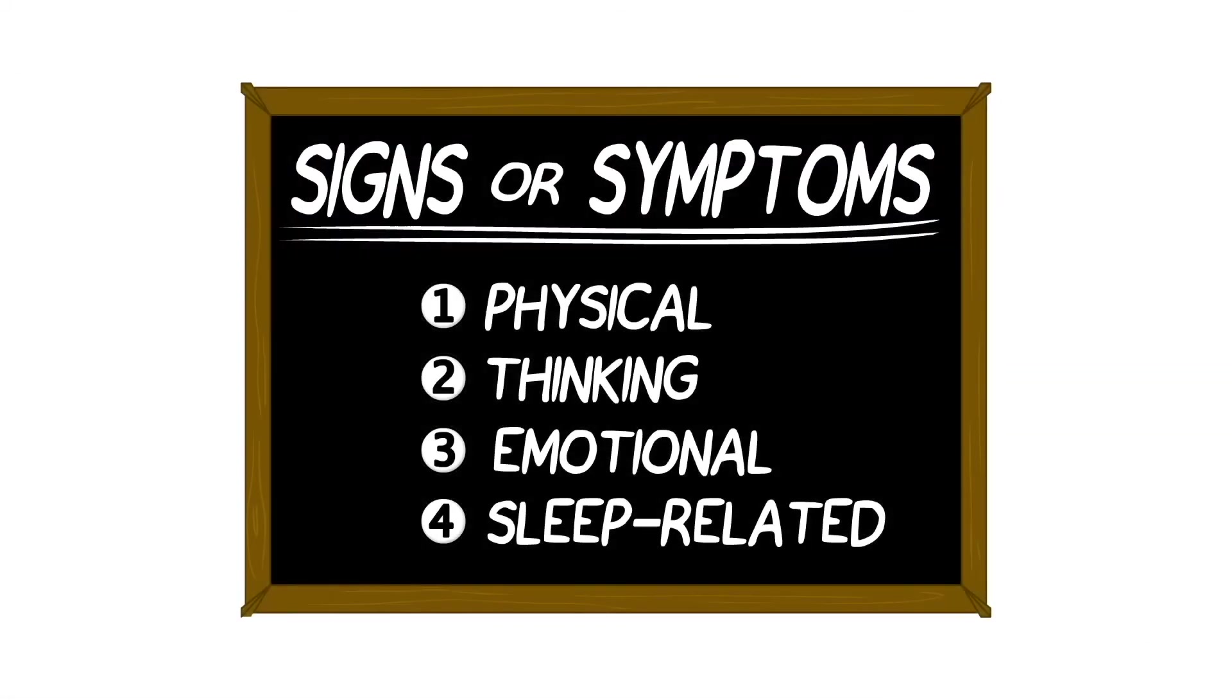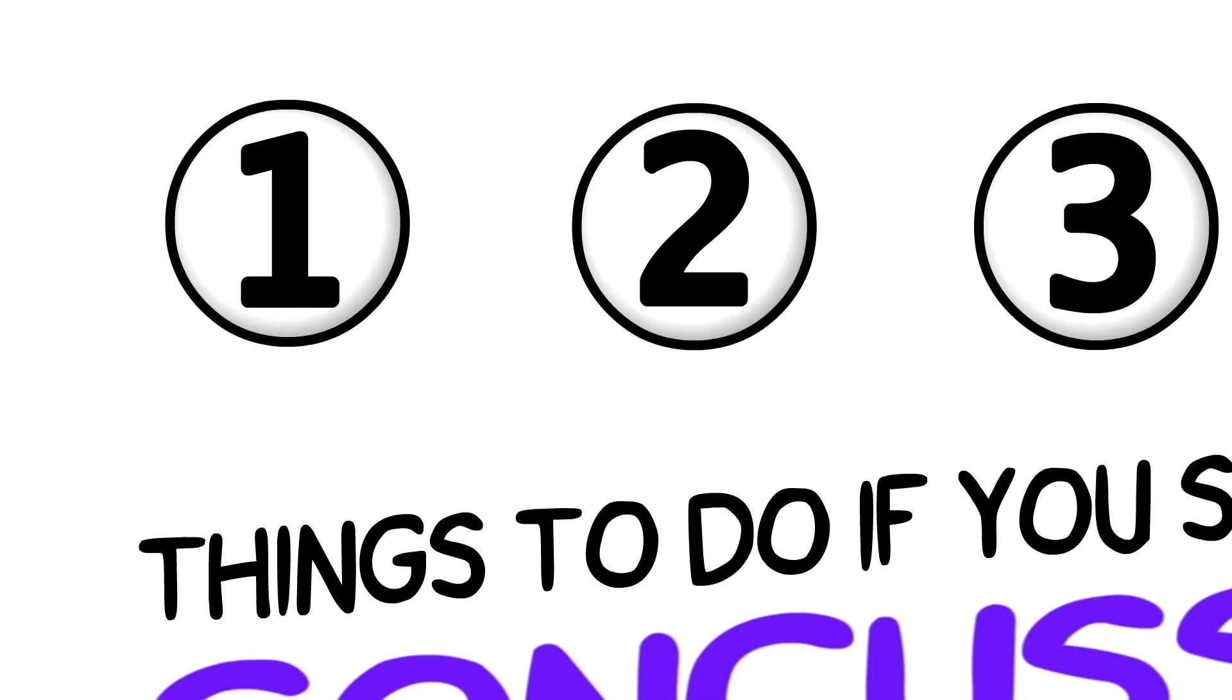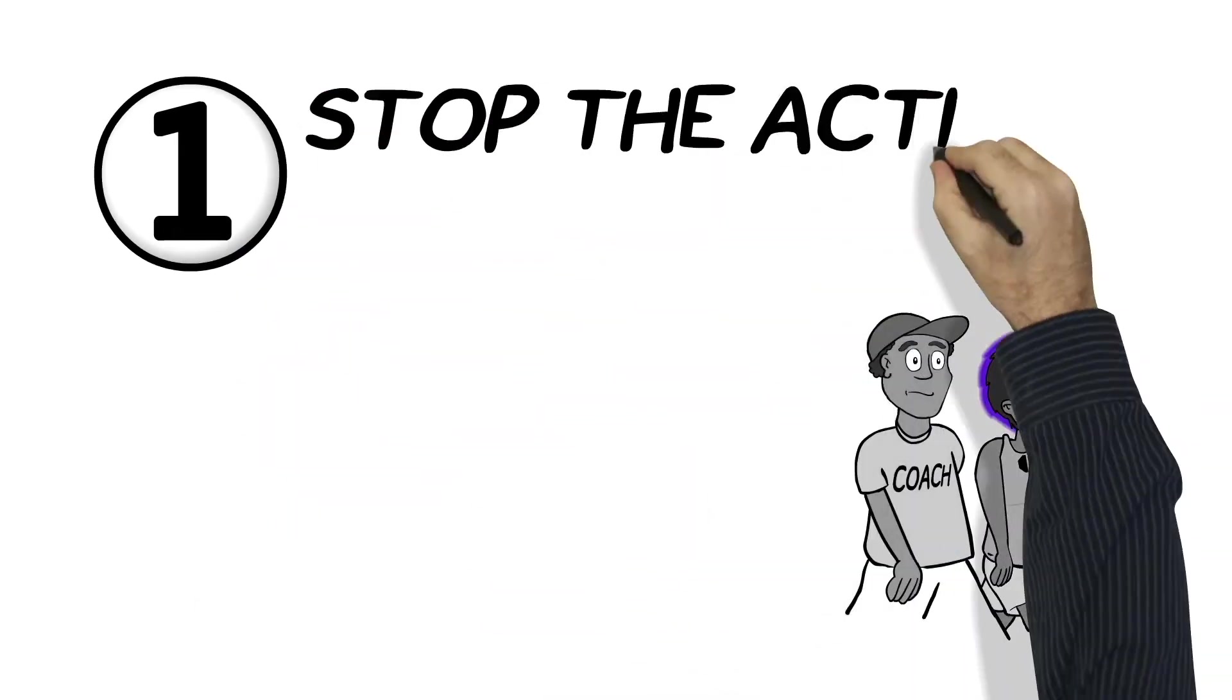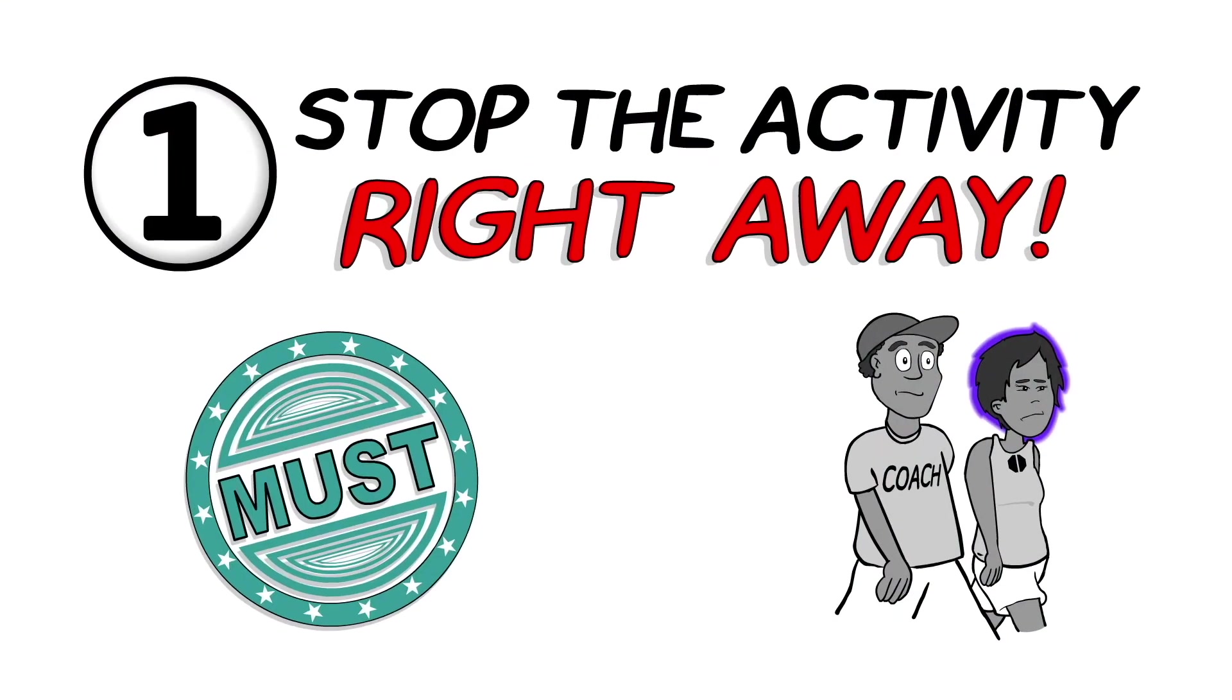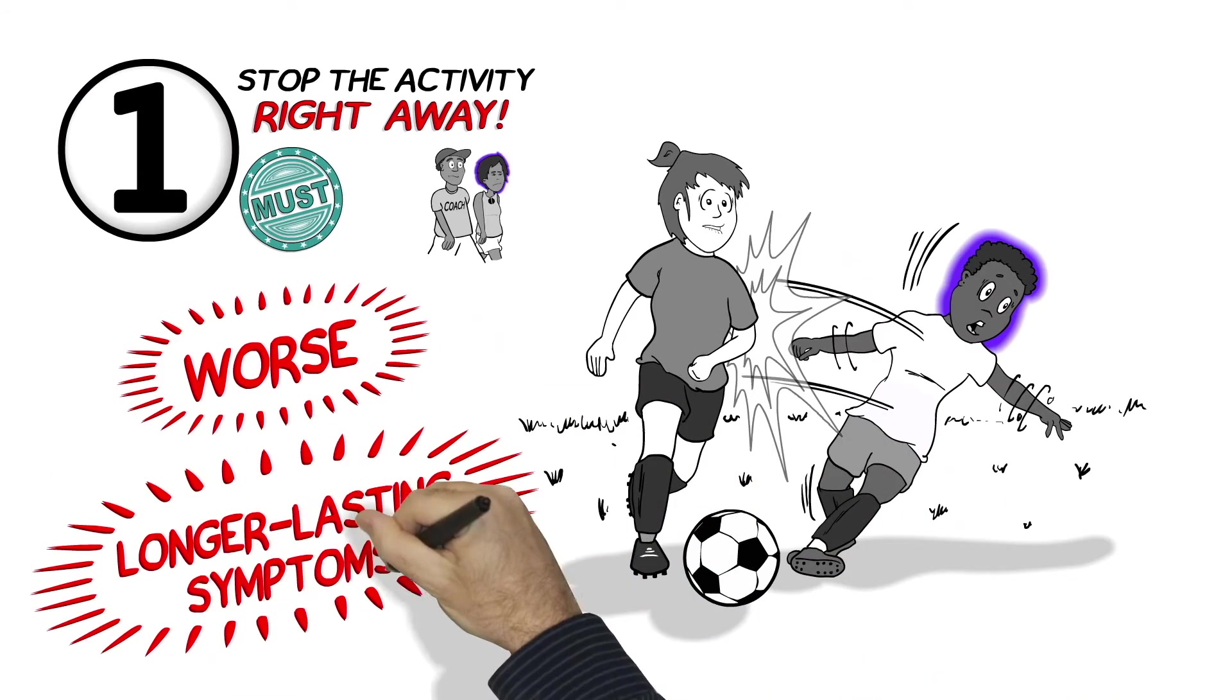So, now that you know what to look for, here are the four things to do if you think that you or your teammate has a concussion. 1. You have to stop the activity right away. This is a must. If you keep playing or practicing, you might make things a lot worse and can make your symptoms last longer. A coach escorts a player off the field after the player experiences an impact.